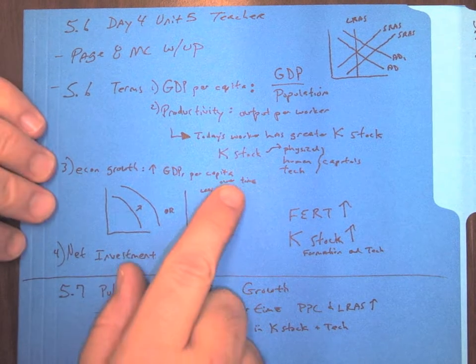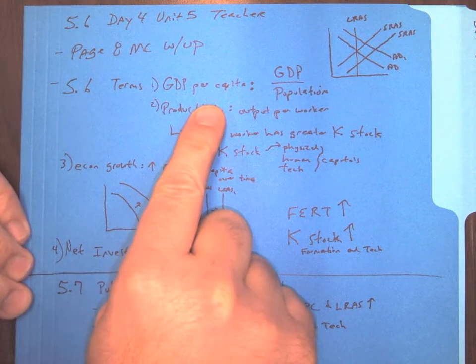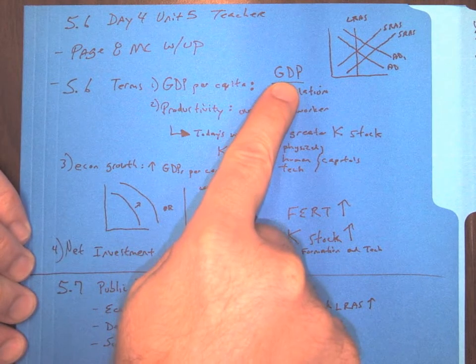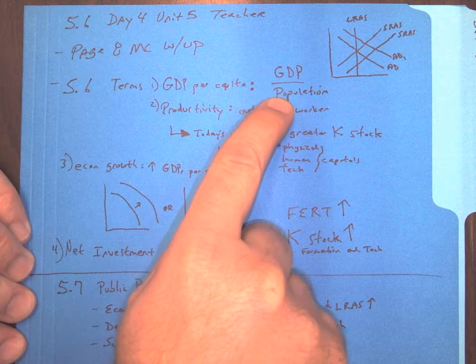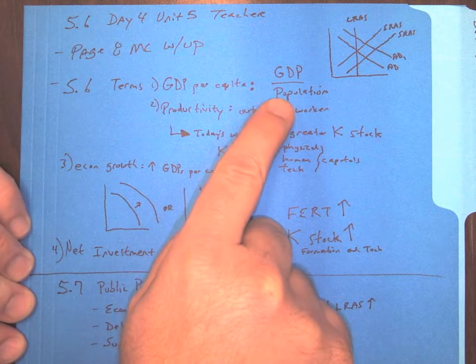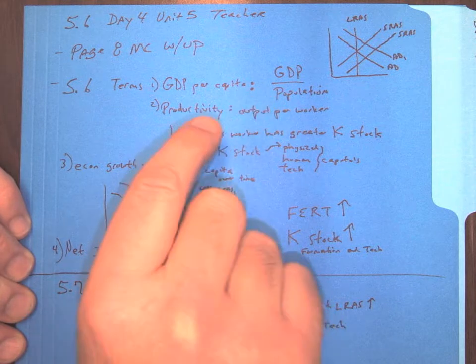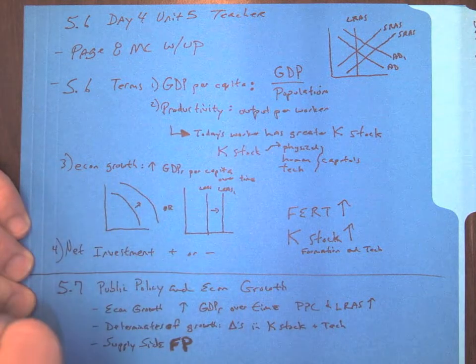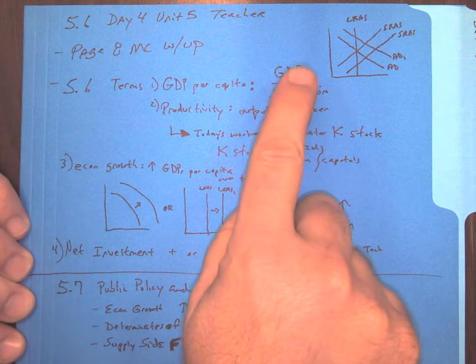So the key terms for this are going to be GDP per capita, which is you take GDP or real GDP, whatever numbers they give you, and simply divide it by the population. GDP per capita is something that can increase if we have economic growth because the amount of GDP that we're able to make would increase.